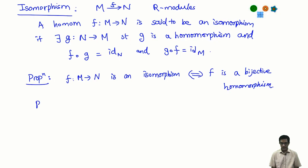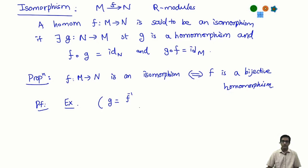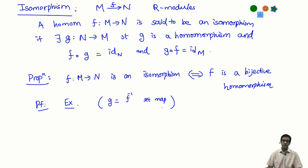If you have these two properties then that is enough to find a map G. I am going to leave the checking as an exercise. Recall that if I have a bijection between any two sets, then I have an inverse set map going in the opposite direction. It is very easy to check that because F is a homomorphism, the inverse map will also acquire the same properties of a homomorphism. So, isomorphism is nothing but a bijective map of sets which is also a homomorphism.